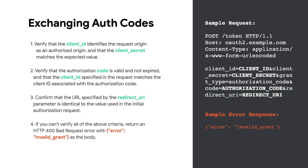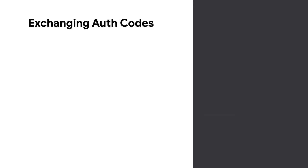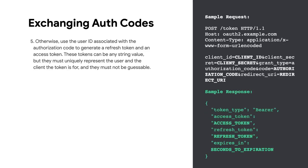If you can't verify all of the above criteria, return an HTTP 400 bad request error with error invalid_grant as the body. Otherwise, use the user ID associated with the authorization code to generate a refresh token and an access token. These tokens can be any string value, but they must uniquely represent the user and the client the token is for, and they must not be guessable.